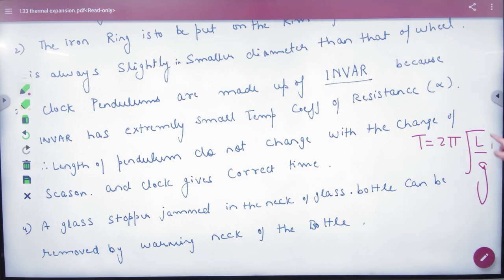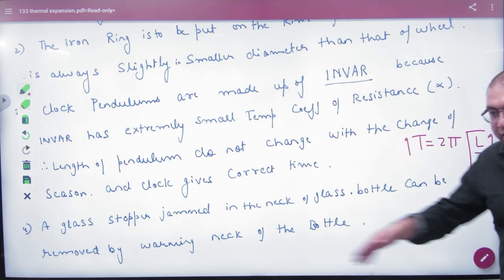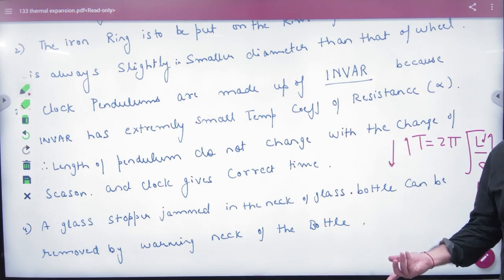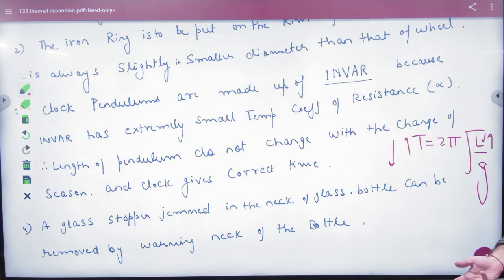Length will increase in heat, so time period will increase. What happens in cold? Length will decrease, and time will decrease. So in warm weather the clock runs slower, and in cold weather faster. In normal temperature days it's okay, but temperature changes cause timing errors.